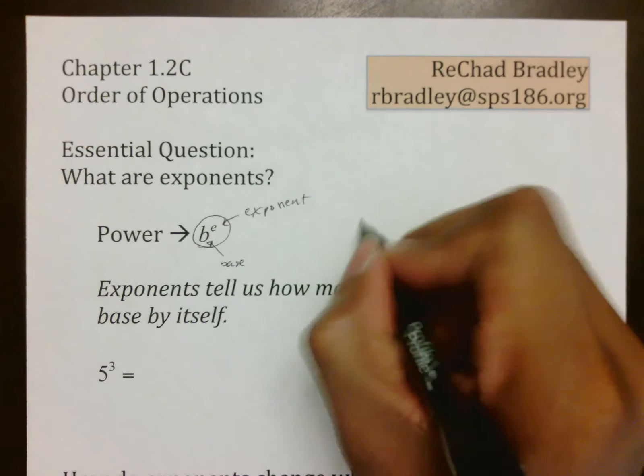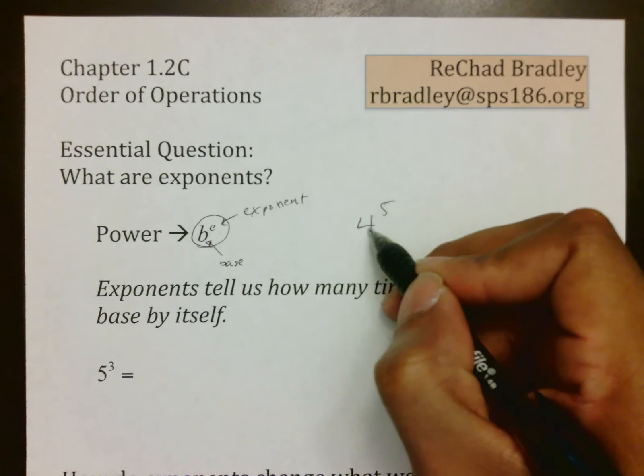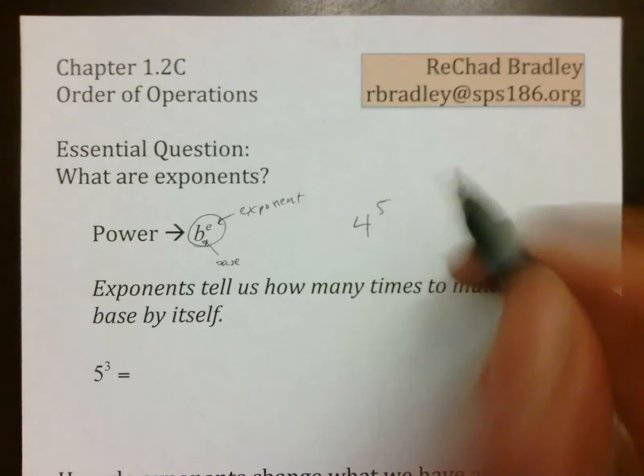So if I had the power four to the fifth, remember this is a power. My base is four. My exponent is five. That's how you identify those things.